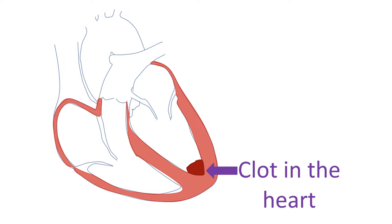Blood clots can form inside the heart in the region of the damaged heart muscle. These clots can move out into the circulation and block blood vessels elsewhere. If a clot blocks a blood vessel of the brain, a stroke with weakness of one side of the body may occur. Clots can also enter the blood vessels of the heart itself and block them, leading to a heart attack in addition to myocarditis.